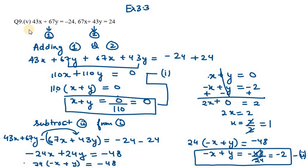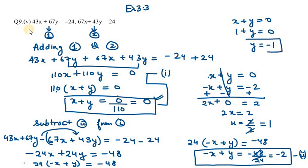Now we need to find the value of y. Using equation number 1, x plus y equals 0, and substituting x equals 1, we get 1 plus y equals 0, so y equals minus 1. So x equals 1 and y equals minus 1 — that's your answer for question number 9, fifth part. Thank you for watching this video.